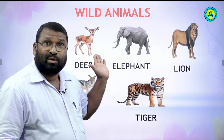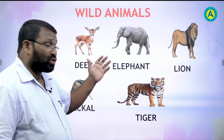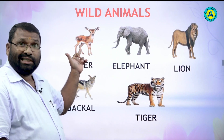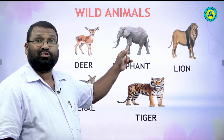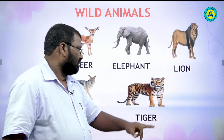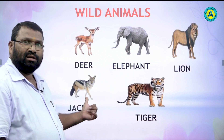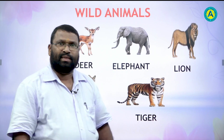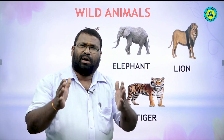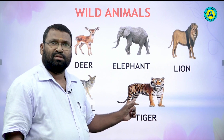Some wild animals are here. They stay in the forest. Let us know them. First is deer. This is elephant. And this one? Tiger. And this one? Jackal. We have today a very interesting story on this wild animal — tiger.